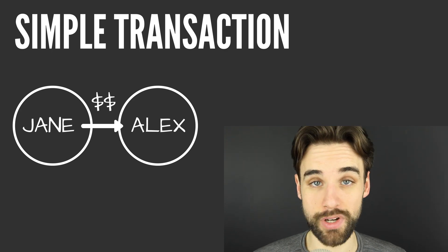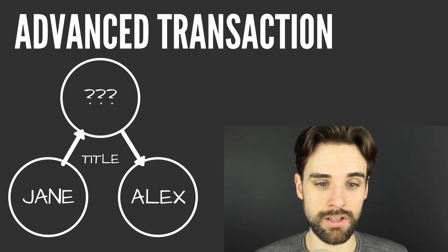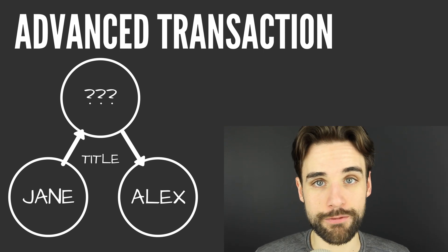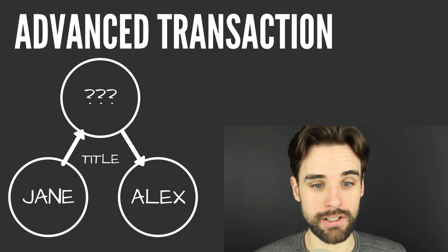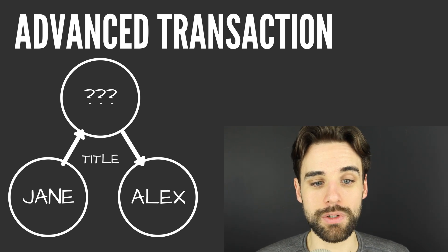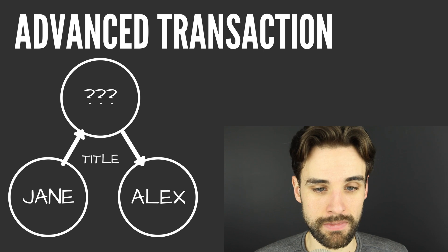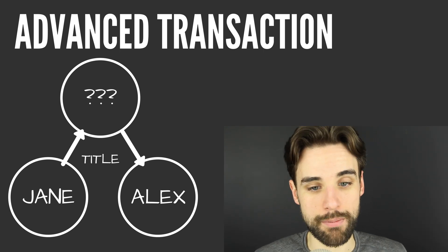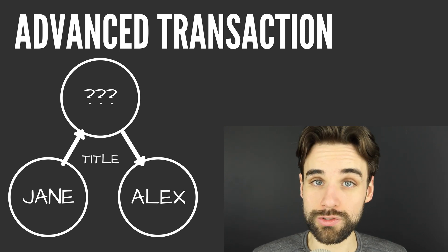What about a more advanced transaction? What if I want to sell you my house? I would need a place to store the deed to my house and a way for someone to buy it and transfer it. That's what a smart contract does. This is where we write the program that would accept our deed, allow someone to purchase it, and whenever they purchase it, transfer the deed from the smart contract to that person's account and release all the funds to my account once the deed is sold.